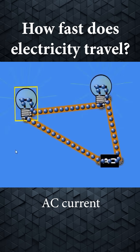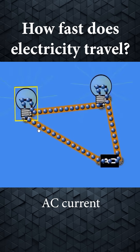With alternating current, the electrons don't actually drift along the wire. Instead, they oscillate back and forth around a position, and therefore have a true drift velocity of zero.